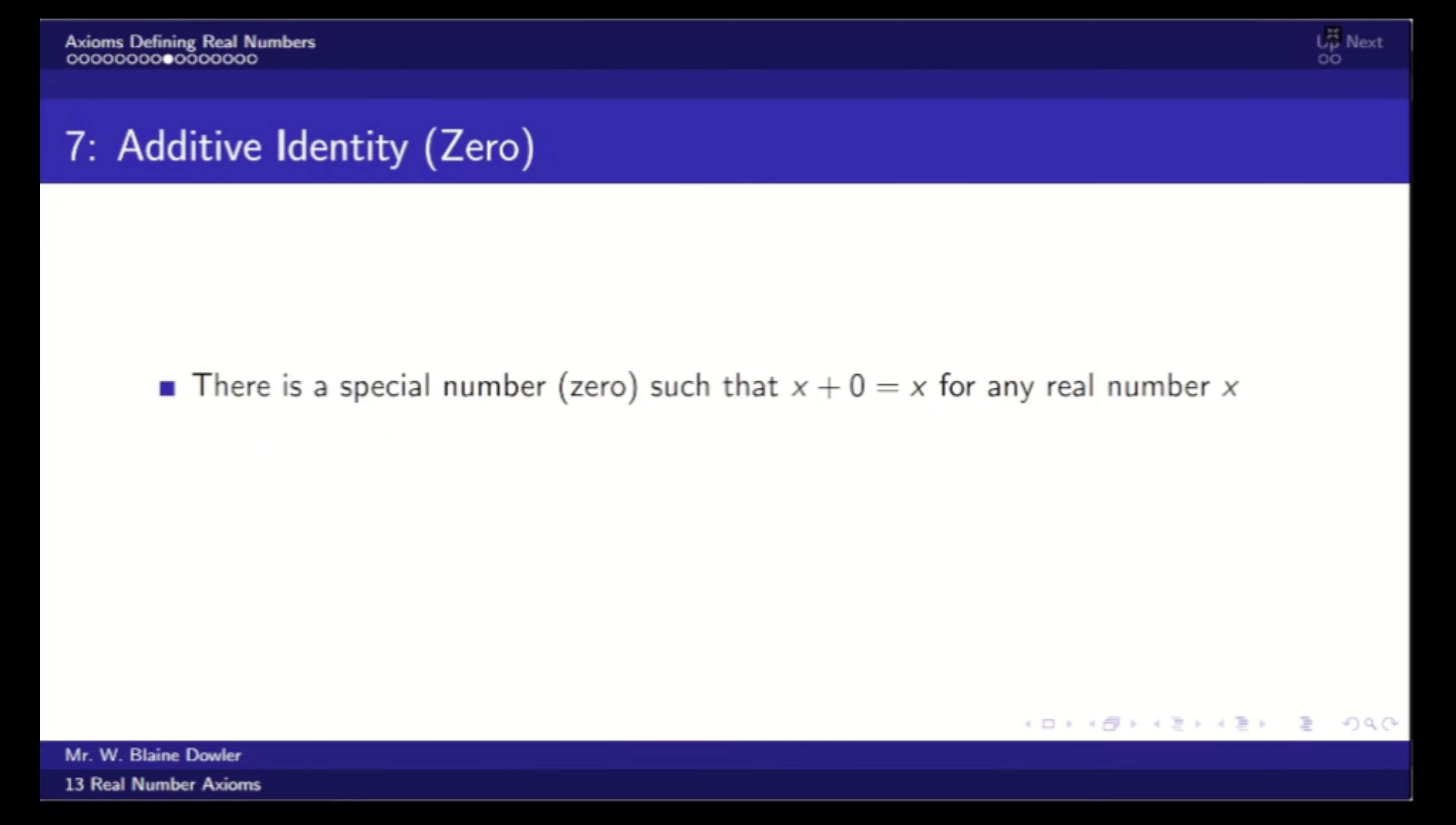Now, we also have axiom 7, the additive identity, also known as zero. There's a special number such that x plus that number zero equals x for any real number x. This is known as the additive identity, because it doesn't change the identity of any number it has been added to.